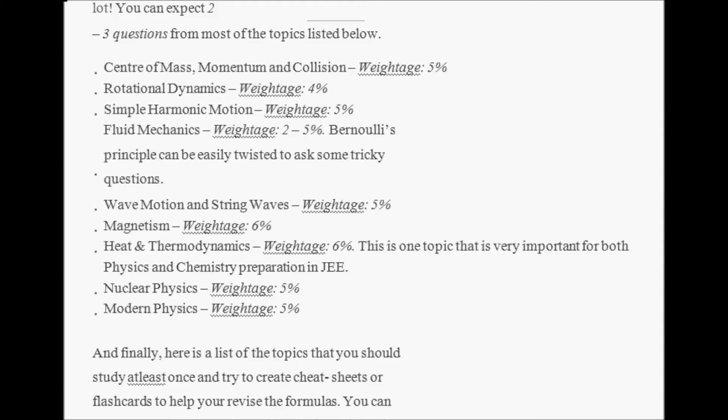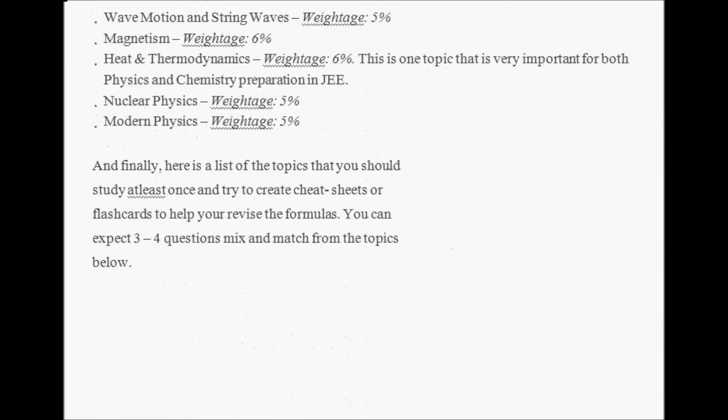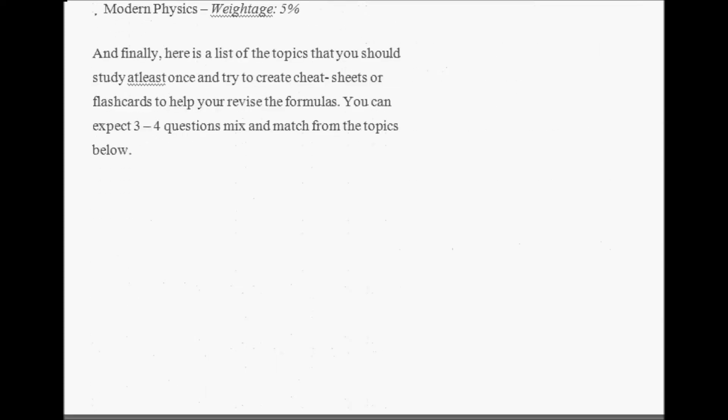Next, Nuclear Physics and Modern Physics. Guys, these two chapters are very easy and there is very limited amount of theory in the syllabus. So examiners can't expect much to take out from this. It's good to go for these two chapters which are very easy. And finally, here is a list of topics that you should study at least once and try to create cheat sheets or flashcards to help you revise the formulas.